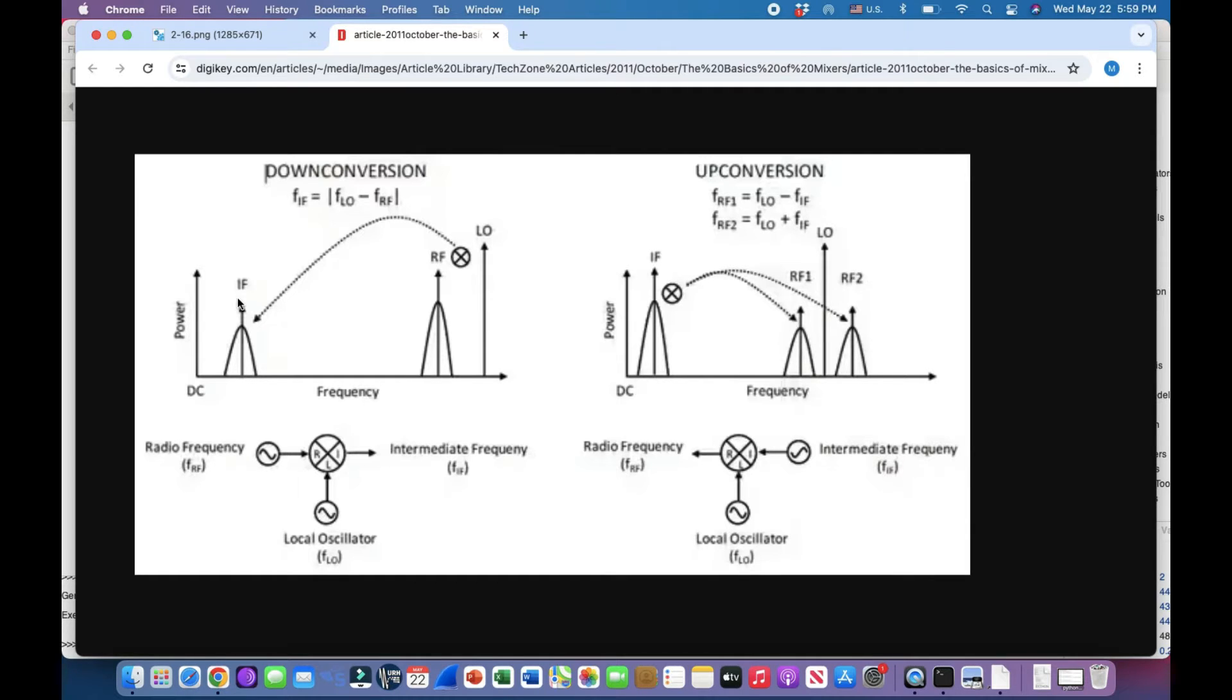When you're up-converting, this is what you want. You're going to take your IF because you've already processed your IF. Now you're ready to send this via antenna, which means you're transmitting it. You're going to take your lower frequency that you've been working with—let's say for AM or FM—you're going to multiply them together using a mixer. This FLO minus FIF would give you FRF1, and FLO plus FIF would give you FRF2. So that is your up-conversion process.